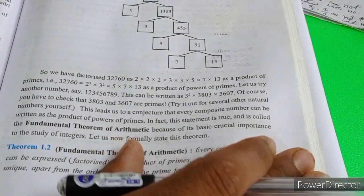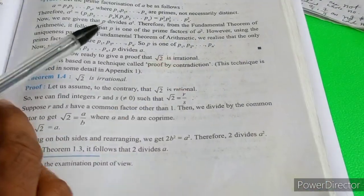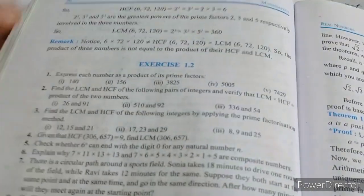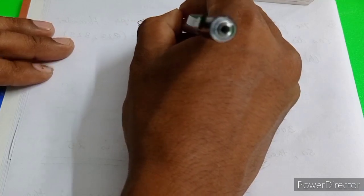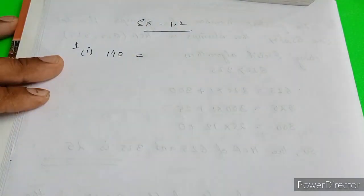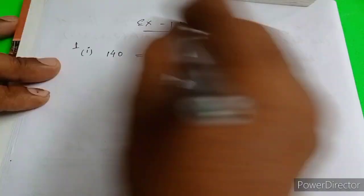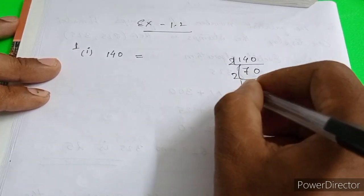Next, we will move to Exercise 1.2. This is a very easy concept. Express each number as a product of its prime factors. We need to find the product of its prime factors. This is Question Number 1, roman number 1, that is 140. Now 140, I'll find the factors: 2, 70, 2, 35, 5, 7.